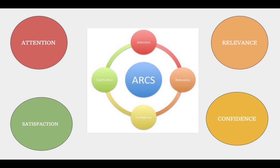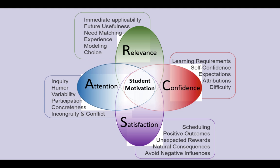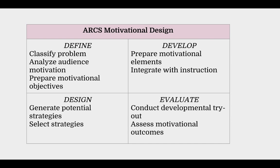The ARCS model is a method for improving the motivational appeal of instructional materials. It has three distinctive features: a set of conceptual categories that characterize human motivation — Attention, Relevance, Confidence, and Satisfaction — each category includes sets of strategies to enhance the motivation of instruction, and thirdly, it incorporates a systematic design process called motivational design.